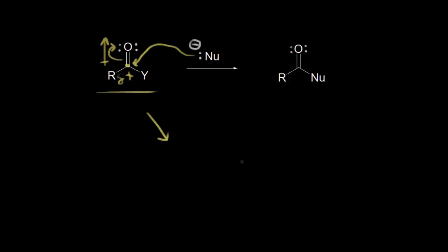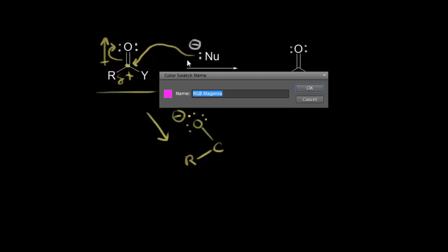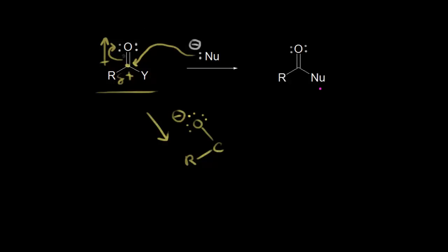Let's draw the result of that nucleophile attack. We would have an R group, a carbon, and on the left side an oxygen with three lone pairs of electrons, giving it a negative one formal charge. These electrons in magenta move off onto our oxygen, giving us a negative one formal charge.